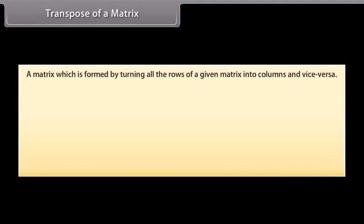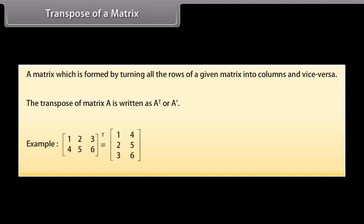Transpose of a matrix: A matrix which is formed by turning all the rows of a given matrix into columns and vice versa. The transpose of matrix A can be written as A'. For example, transpose of matrix row-wise — first row: 1, 2, 3.